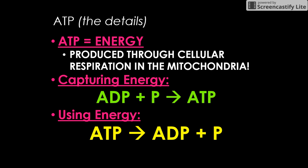It's produced through a process called cellular respiration in the mitochondria. Two key equations I want you to write down are capturing energy. So when we're capturing energy, we are making ATP. When we are using energy, we are breaking ATP. So breaking ATP down is when we're using it, capturing it is when we're making it.